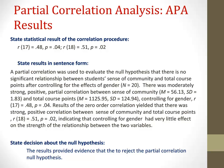Looking at the zero-order correlation coefficient and the partial correlation coefficient, you'll notice they are rather close to one another. This indicates that controlling for gender had very little effect on the strength of the relationship between the two variables. You report both and then discuss them in relation to one another. Finally, you make a decision about the null hypotheses — here, both the partial-order and zero-order correlation null hypotheses can be rejected because the significance levels for both procedures are less than 0.05.